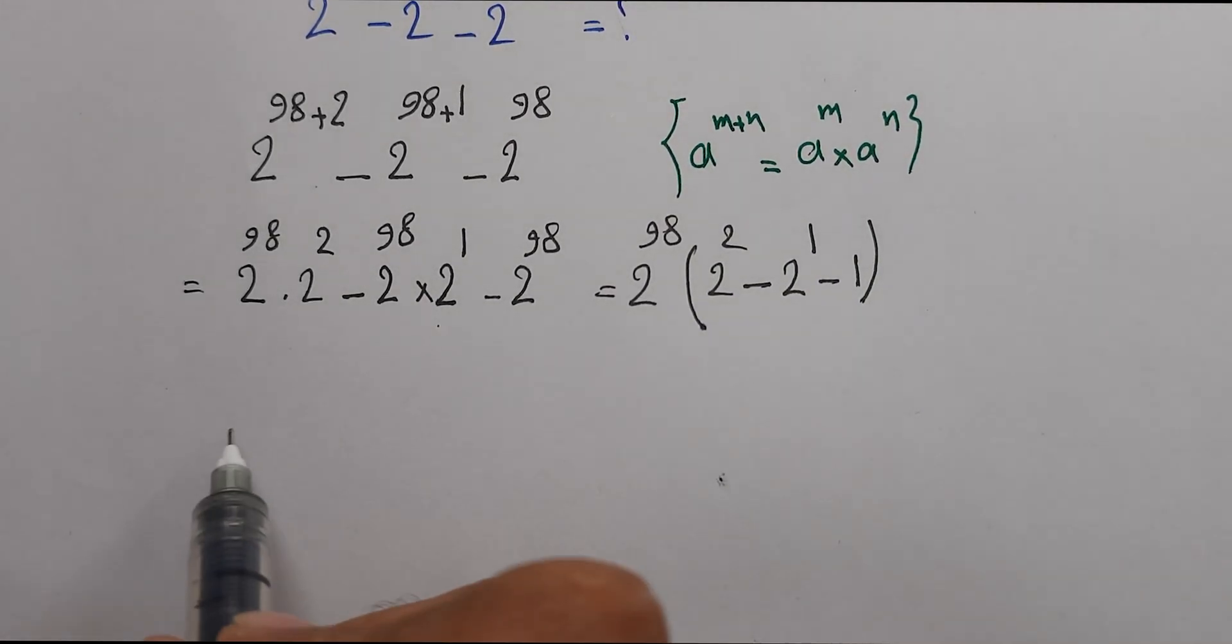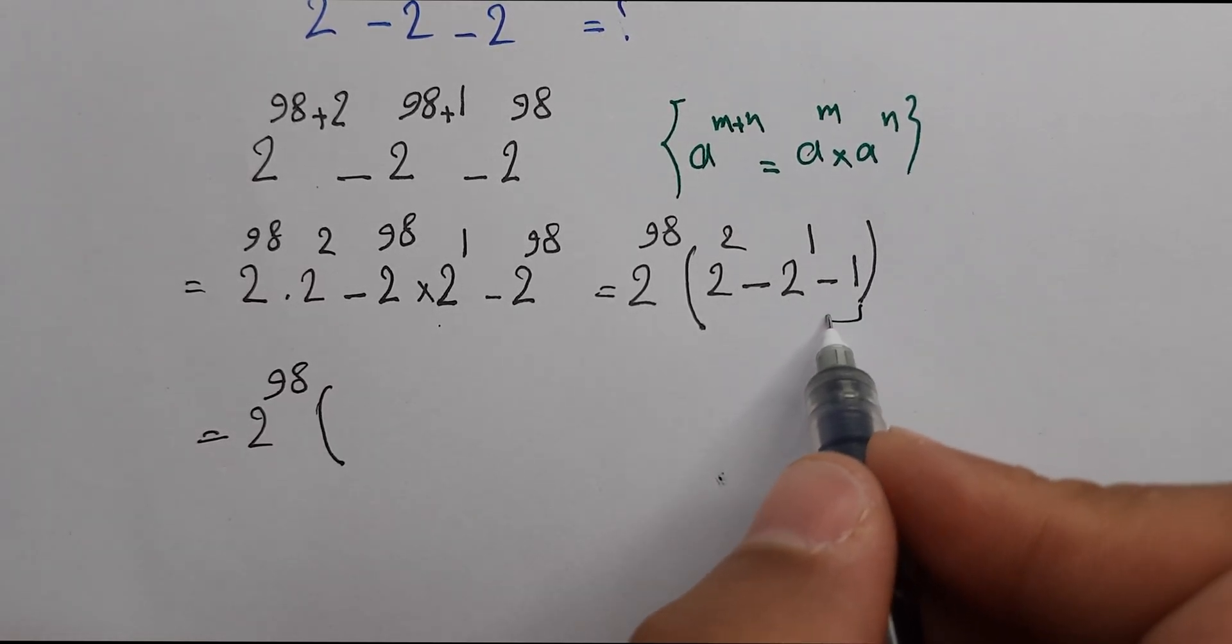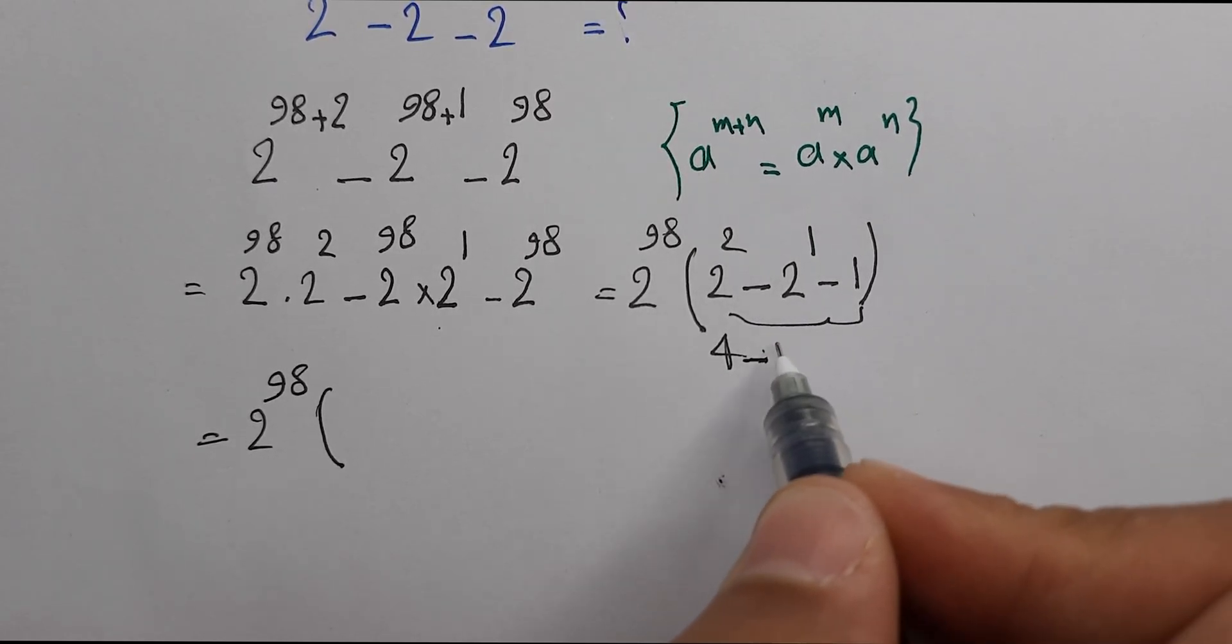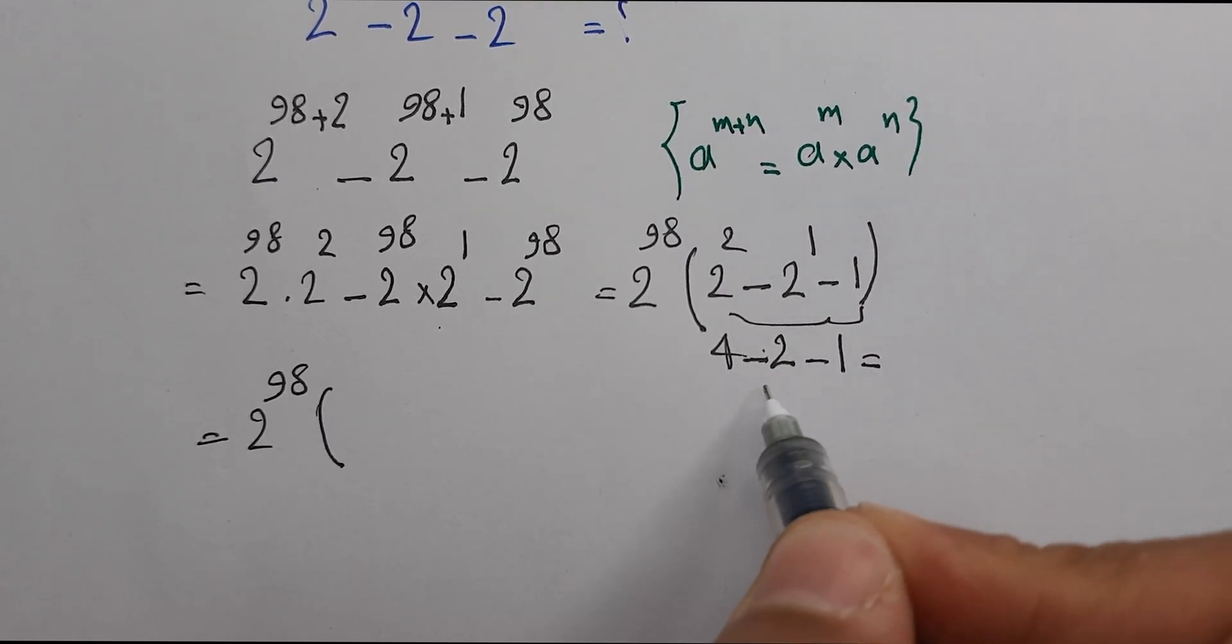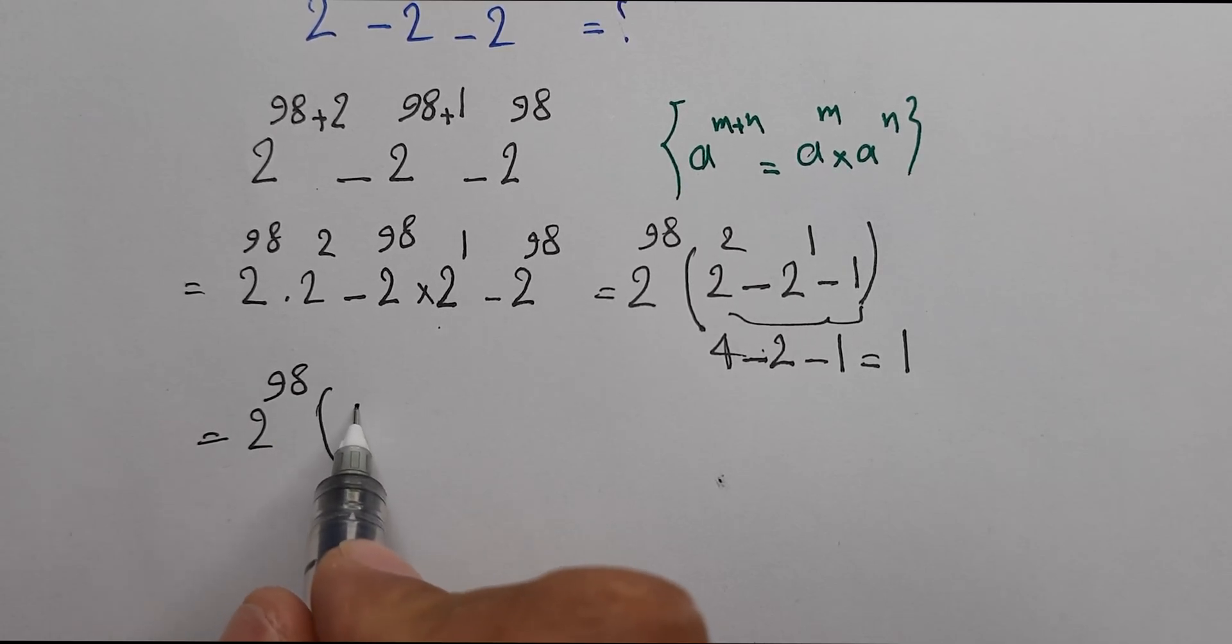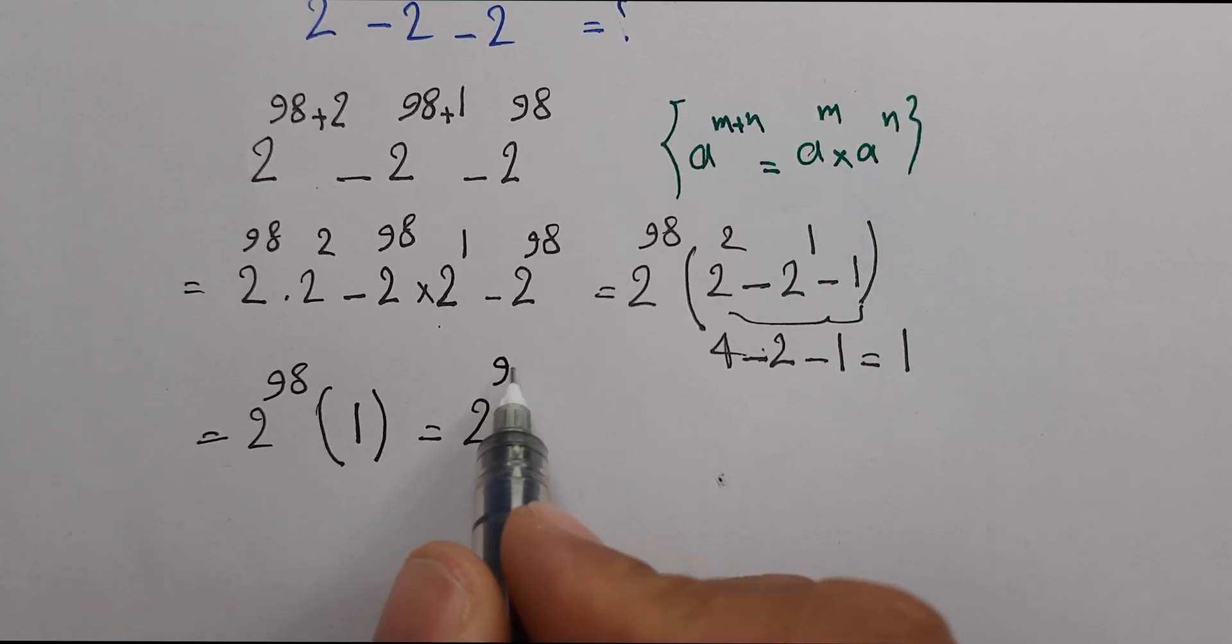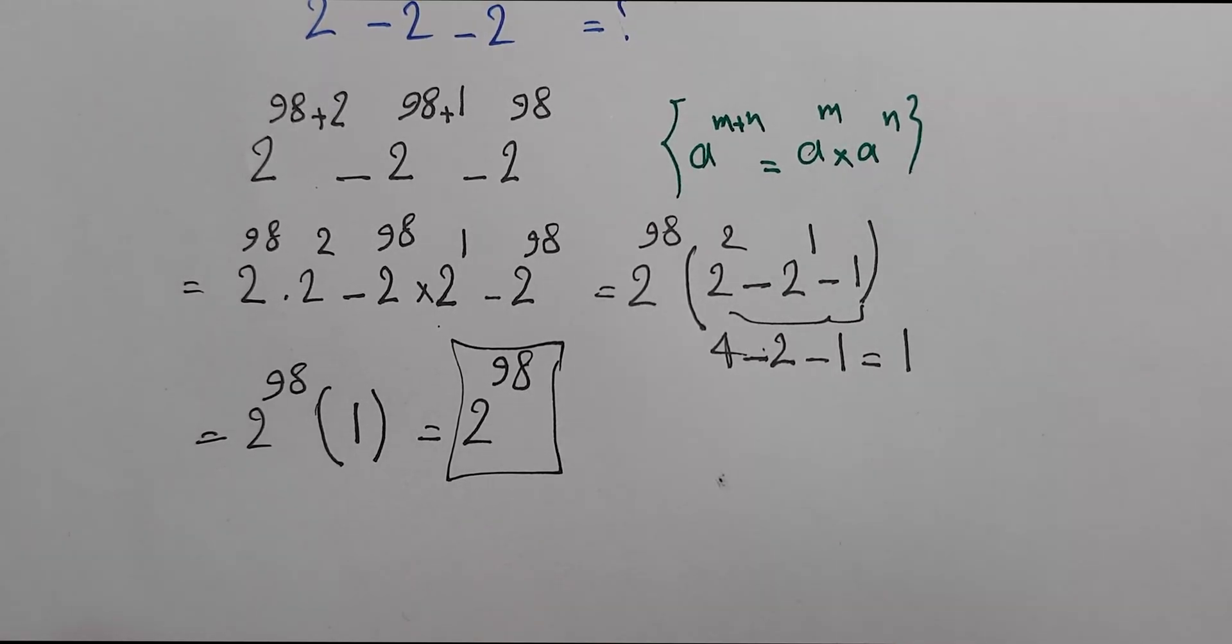Here we have 2 power 98, and inside the parentheses 2 power 2 is 4 minus 2 power 1 is 2 minus 1, and we have 1 inside the parentheses. 2 power 98 multiplied by 1, so our answer is 2 power 98. Goodbye guys.